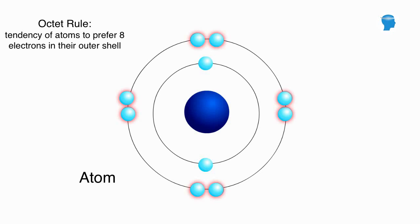When atoms combine to form compounds, they can give up, accept, or share electrons in order to assemble an octet of electrons in their outer shells.